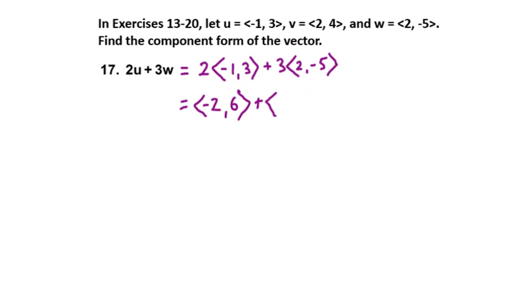We have <-2, 6> and <6, -15>. Then we add these together. So -2 plus 6 is 4, and 6 plus -15 is -9. We go to -15 and up 6 from that, so we get -9. That is the answer to problem 17: <4, -9>.